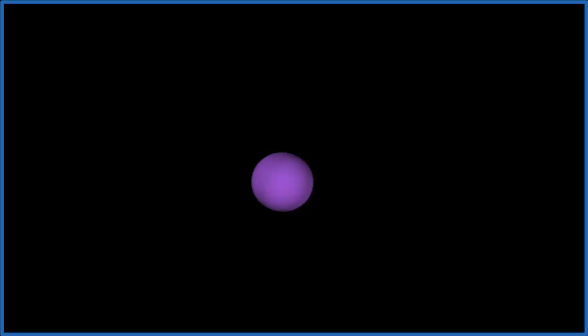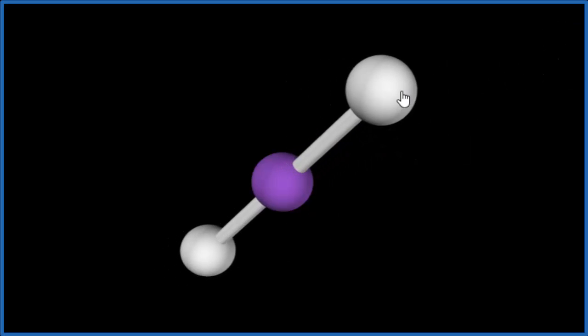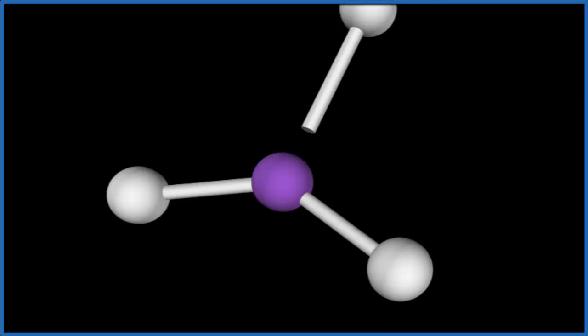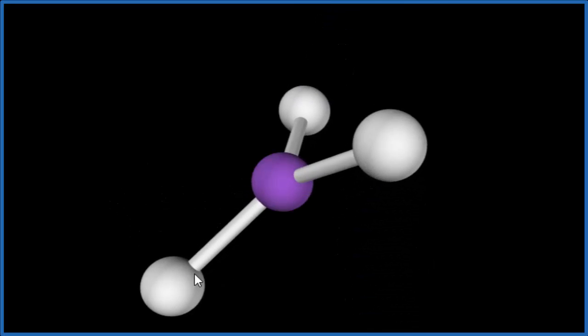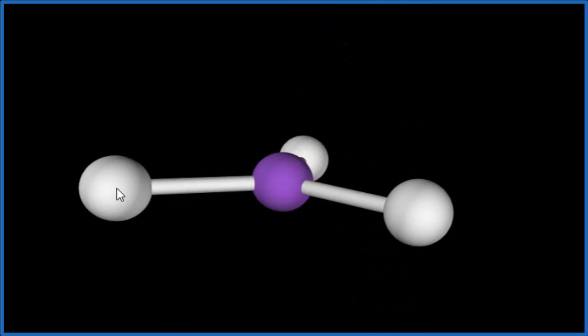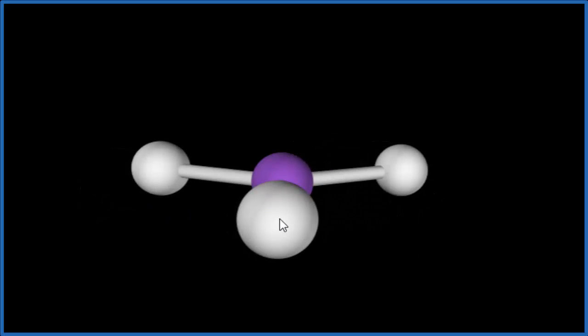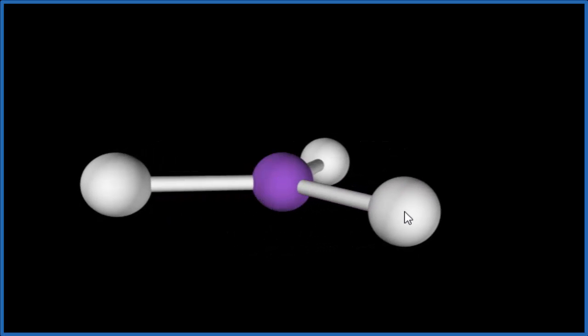So the purple represents our central gallium atom. We add one, two. See how they spread out, these chlorine atoms. The third chlorine atom spreads out, and we end up with this trigonal planar molecular geometry. All these elements are in a plane. The bond angle between the chlorine atoms would be 120 degrees.